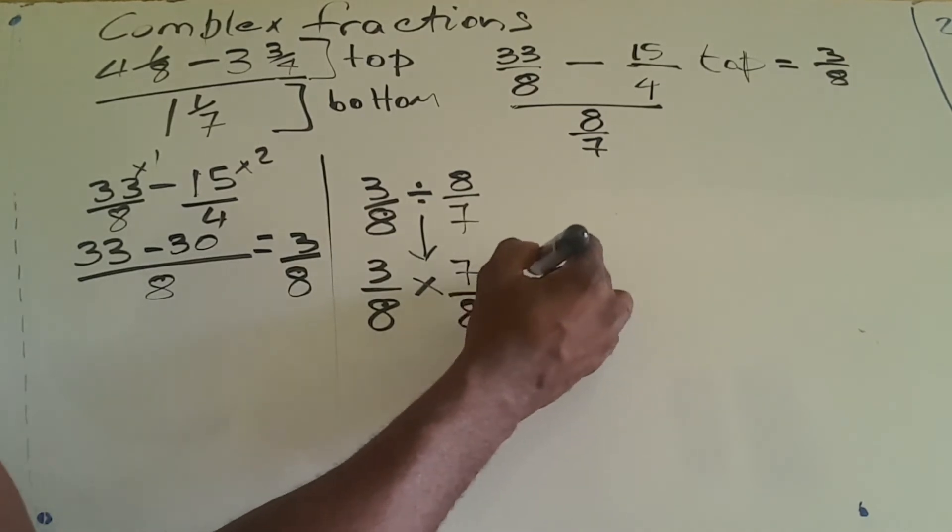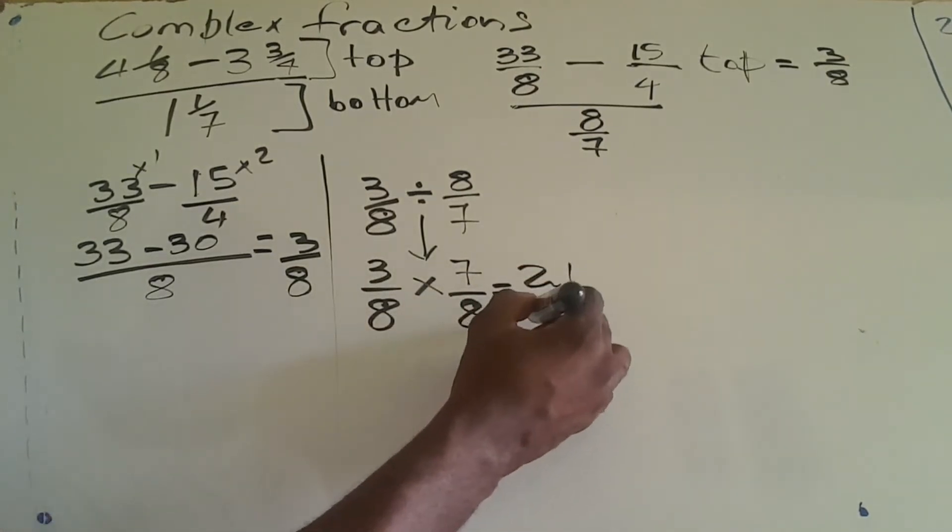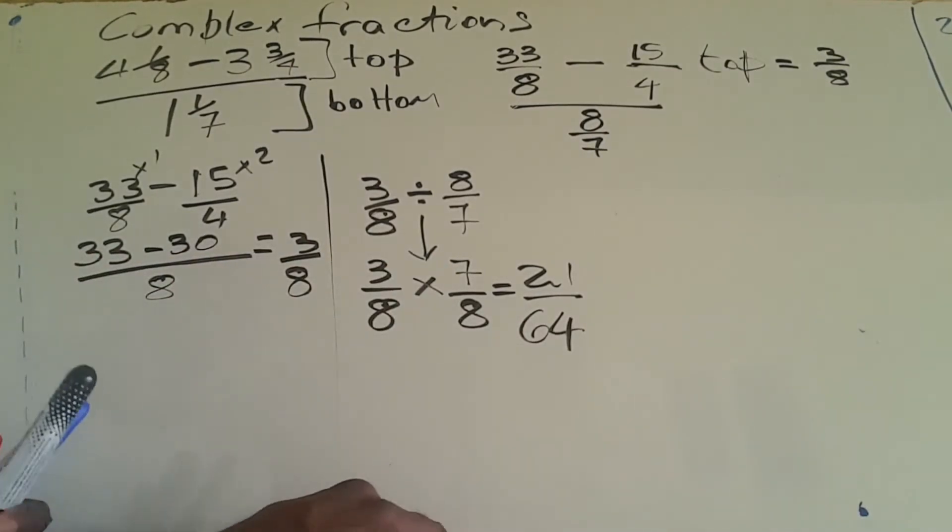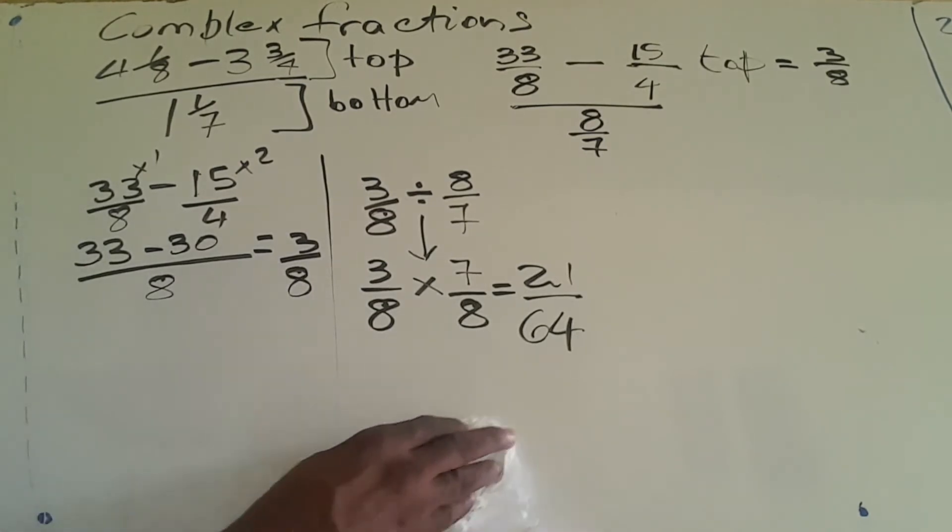So we're looking at 21 over 64. That's the final answer for this complex fraction. Let's look at another example.